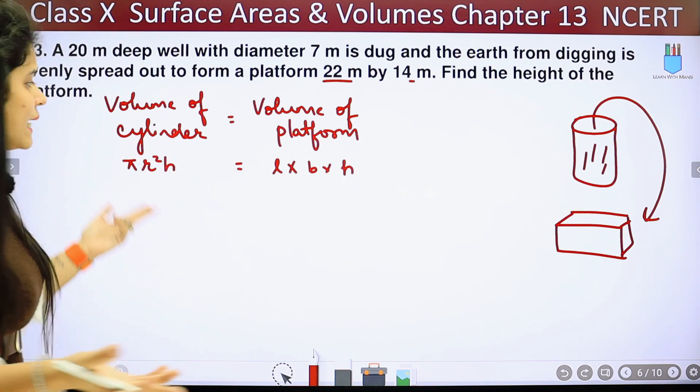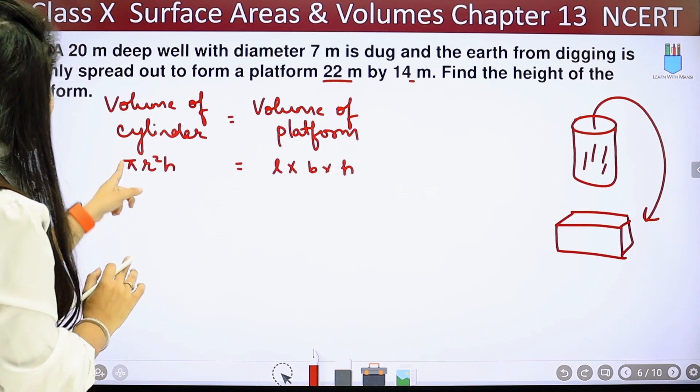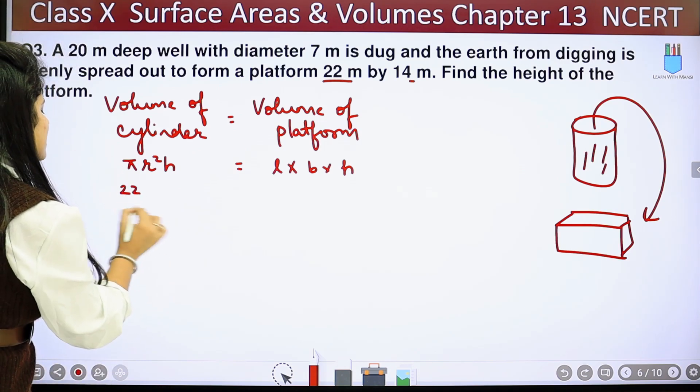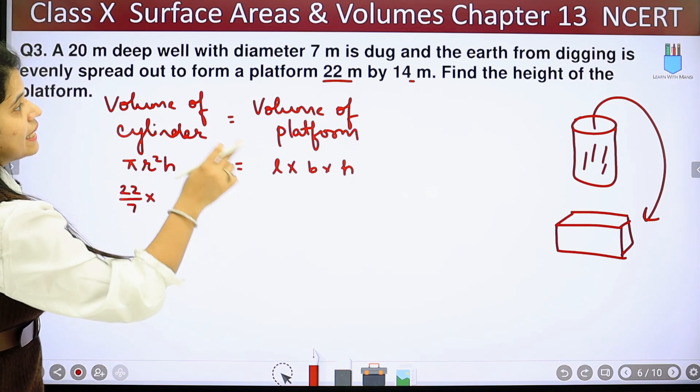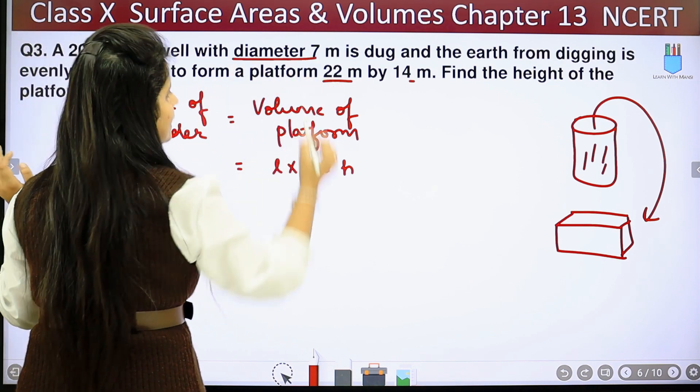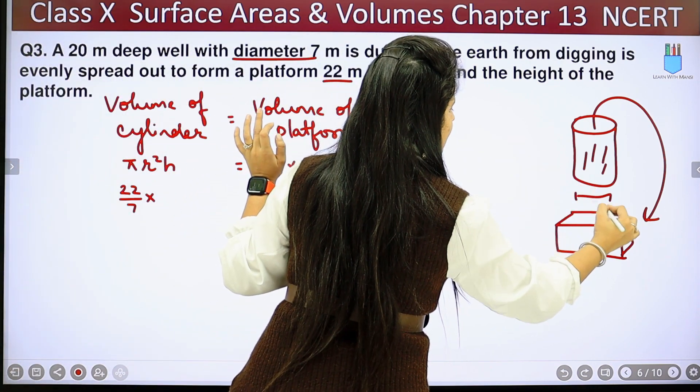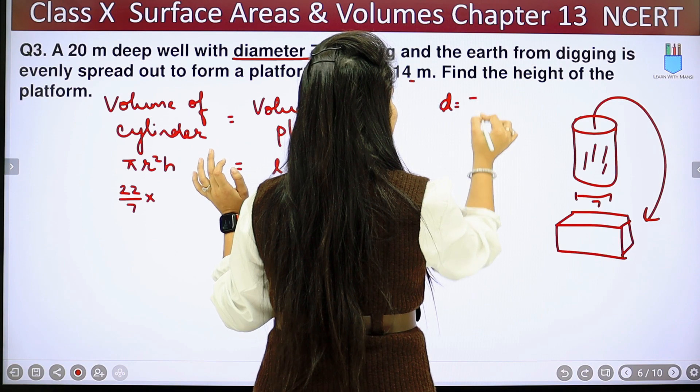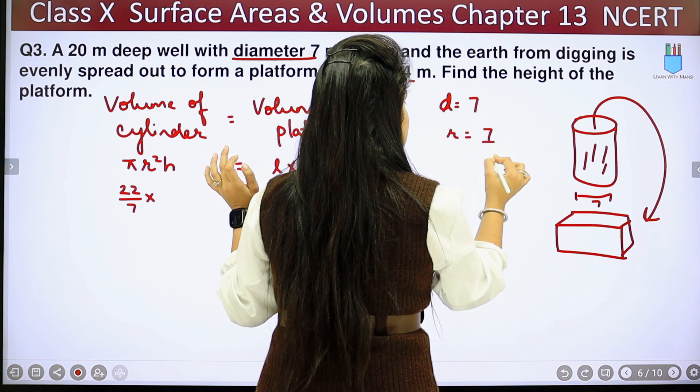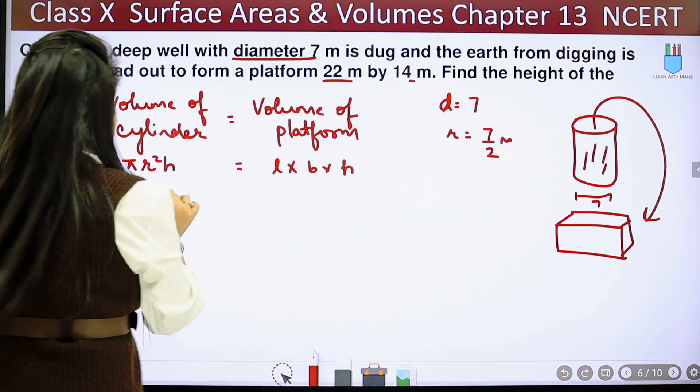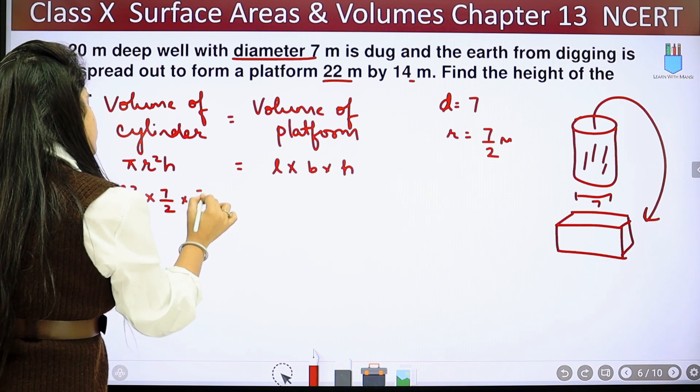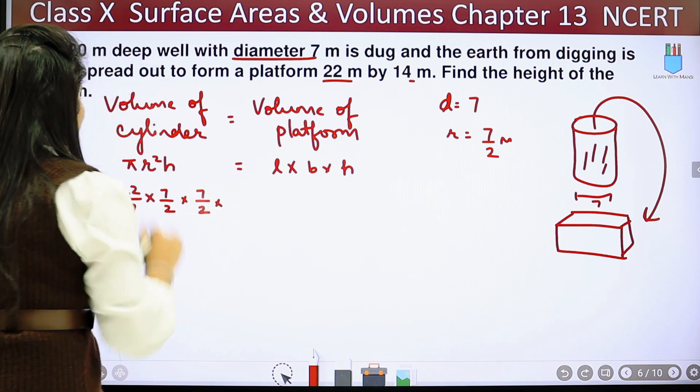We will simply put values here. So we have pi, 22 upon 7, into radius. How much is the radius? We have given diameter. Diameter is 7 meters. So if the diameter is 7, then the radius will be 7 upon 2 meters. So we have 7 upon 2 into 7 upon 2 into height.